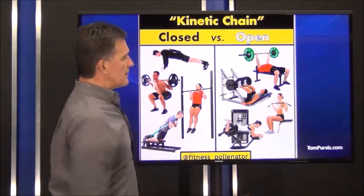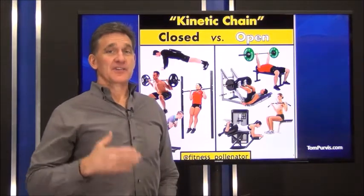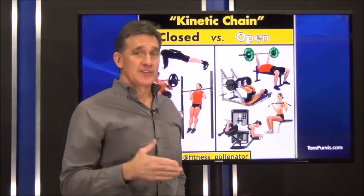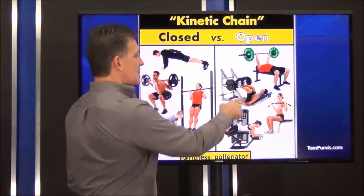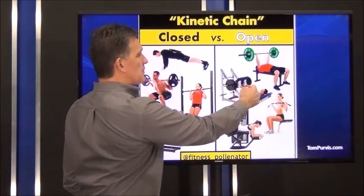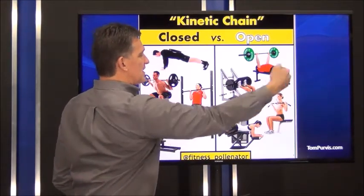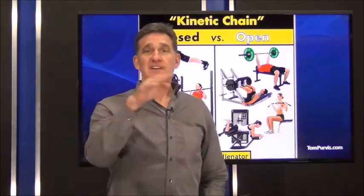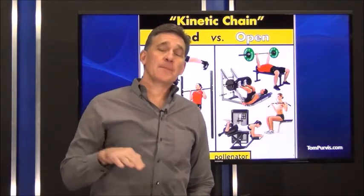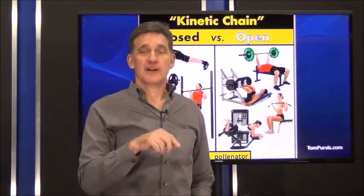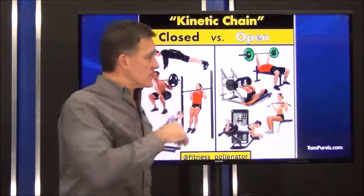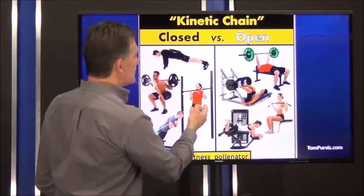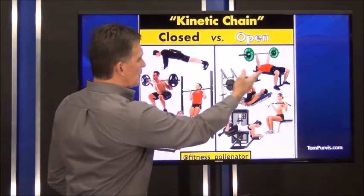What about the leg press? Clearly a constrained closed chain in three different places: the left side through the machine, the right side through the machine, and between — from the back view — between the feet, foot plate, foot, foot plate, other foot. Both feet in the foot plate, and the legs, and the pelvis.